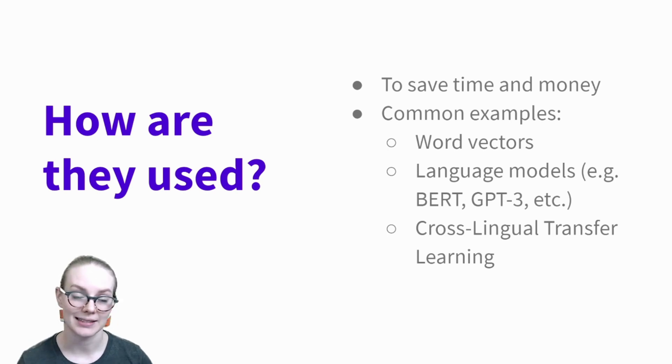How are transfer learning paradigms used? So the biggest play is to save time and money, to use a model that can already do a little bit of what you want it to do, and then using that to make your task easier. Some common examples would be things like word vectors that are taken from a pre-trained model, language models including neural language models like BERT or GPT-3, and things like cross-lingual transfer learning, where you take a model trained on one language and apply it to another language.